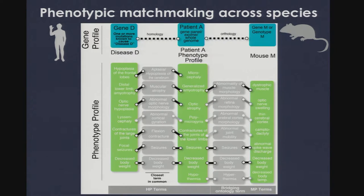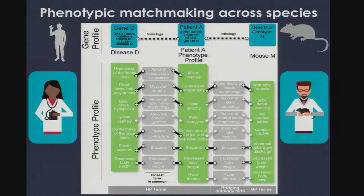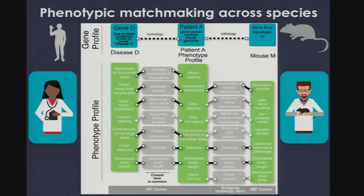Another benefit is that there's a clinician who phenotyped the patient and a researcher who phenotyped the mouse model, each with deep expertise. By doing phenotypic matchmaking, we can also matchmake clinicians to basic research scientists — because it's not necessarily the person who studies the same gene family you want, but actually the person experienced in the right kinds of phenotype assays, since those things are very specialized.